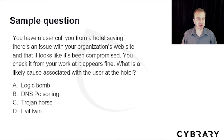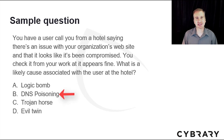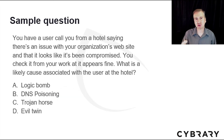Question 2: A user calls you from a hotel saying there's an issue with your organization's website and it looks like it's been compromised. You check it from work and it appears fine. What is a likely cause? The answer is B — DNS poisoning. Most likely the hotel's DNS has been compromised, so the hotel user is being directed to a different website and not actually your organization's website.